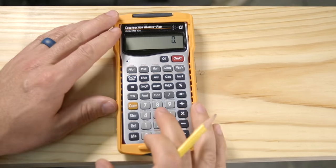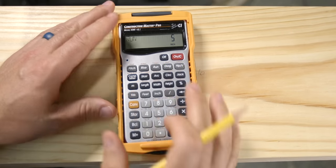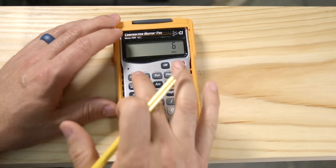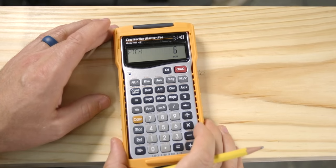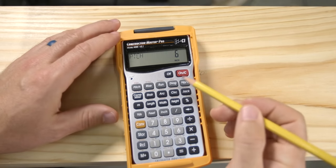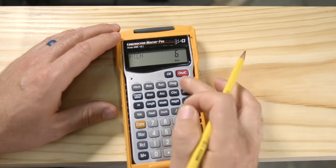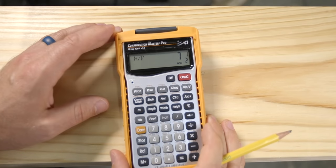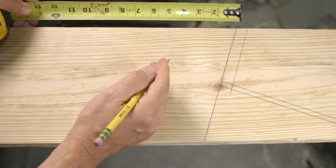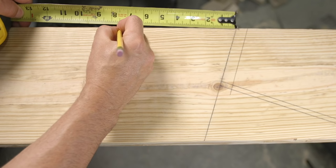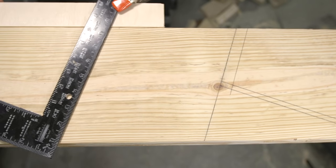Therefore, on the calculator, type five-inch run, six-inch pitch, and because this is a hip rafter and not a common rafter, we're going to hit the hip and valley button for a total of seven and a half inches. If we go back to our layout, we can measure down now seven and a half inches, make a mark, and draw our overhang.